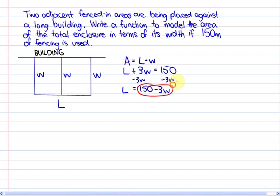And when we substitute that expression for length into the area formula, we're left with a quadratic function of area is equal to 150 minus three widths times width. And to put this into standard form we would have area is equal to 150 widths minus three widths squared.